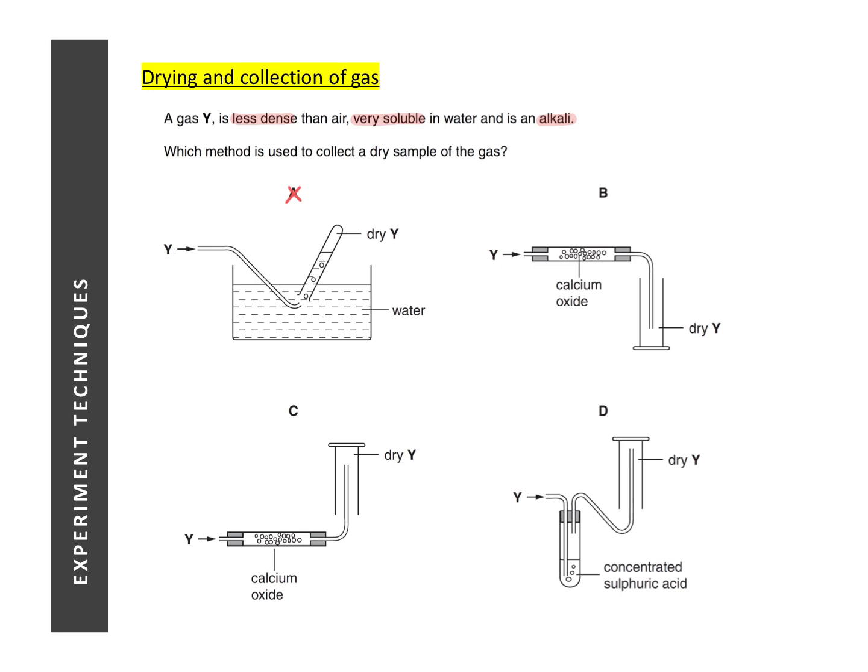We need to look at either upward or downward delivery. Since it's less dense than air, we would have to use upward delivery. Now what is left is to select the correct drying agent. Since it's an alkali, we need to use an alkaline drying agent, and the alkaline drying agent in our syllabus would be calcium oxide.